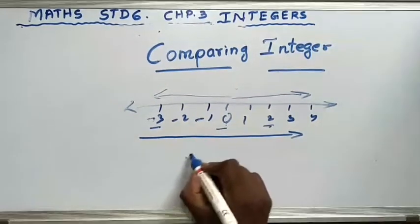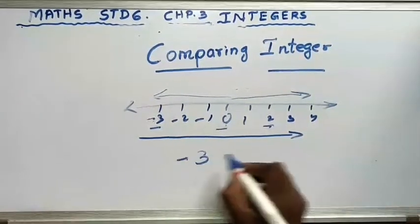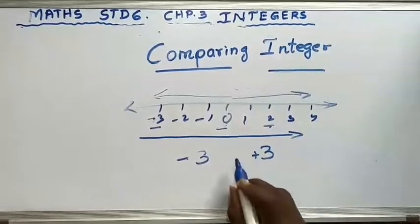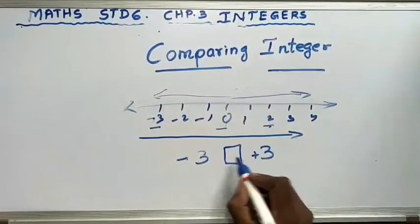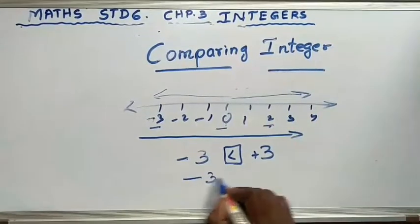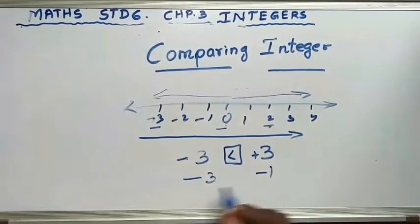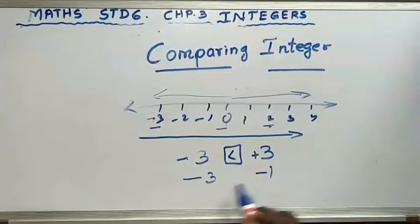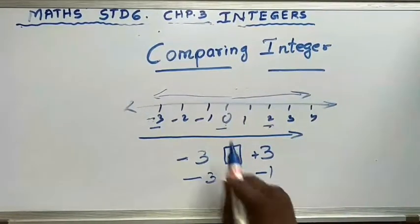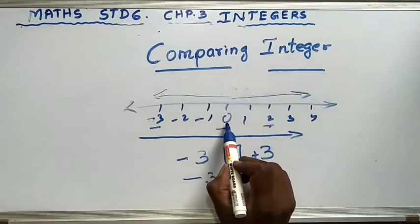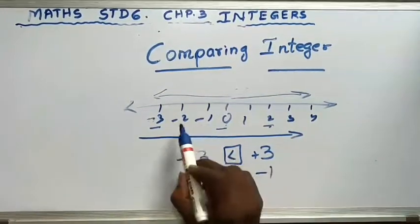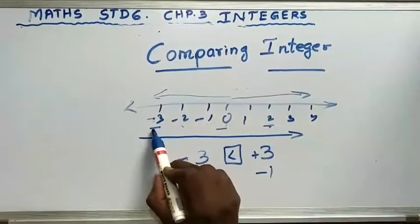I will give you a number: minus 3 and 3. Since 3 means plus 3, plus 3 is greater because it is positive. If I have minus 3 and minus 1, which is greater? Minus 1 is greater. Look at the number line: 0 is greatest, then minus 1, then minus 2, then minus 3. So on the negative side, the number closer to 0 is greater.